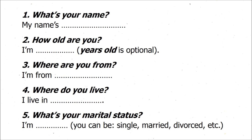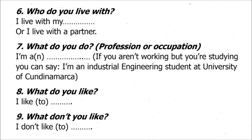Five: What's your marital status? I am — you can be single, married, divorced, etc. Six: Who do you live with? I live with my — you can mention the people you live with. Or: I live with a partner, if you are not married but you live with someone.